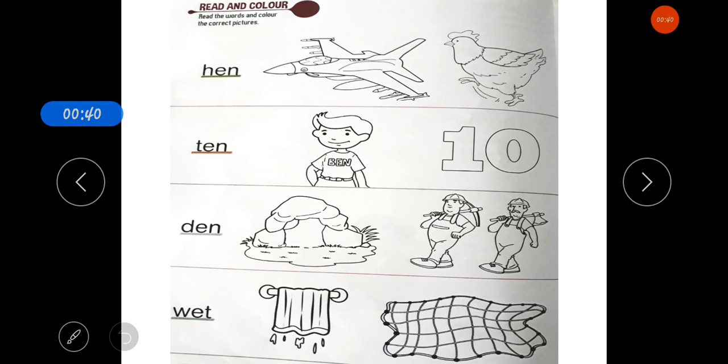Like, the first word is hen. What is hen? You have to color the correct picture. This is jet and this is hen. What is hen? Hen. You have to color the correct picture. Clear? We have got hen.